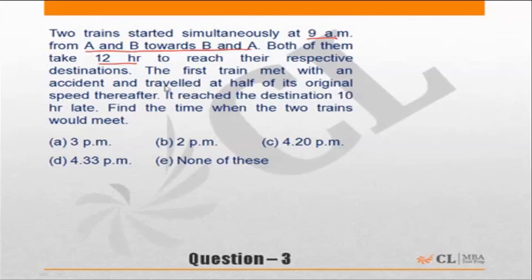The first train met with an accident and traveled at half its original speed thereafter. It leaves the destination 10 hours late. Find the time when the two trains would meet.